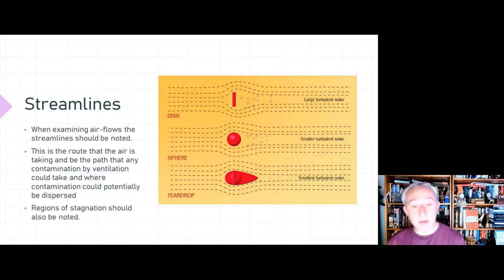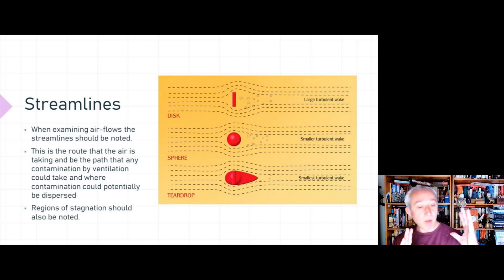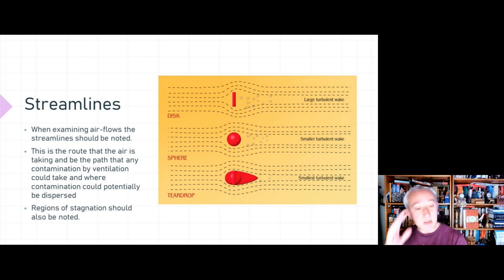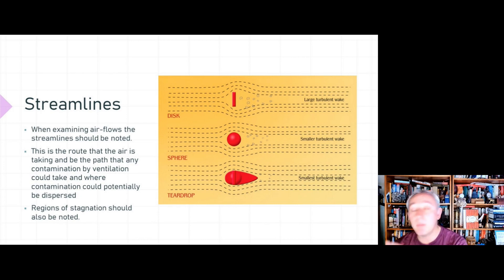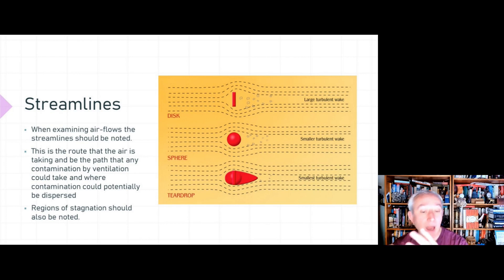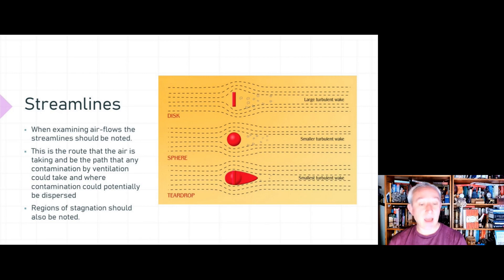When examining airflows, streamlines also need to be noted. A streamline is defined as the route that the air is taking, and it will be the path any contamination could take — what might be called convective transport. When a streamline meets an object and causes turbulence, contamination could potentially be dispersed through turbulent diffusion. The study of precise flow direction also helps us find regions of stagnation, which can often occur in front of machinery and by work surfaces perpendicular to the airflow.